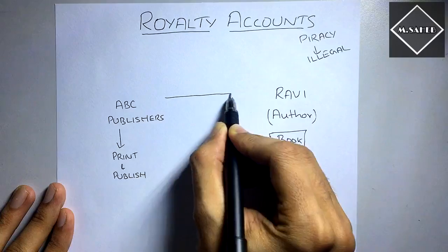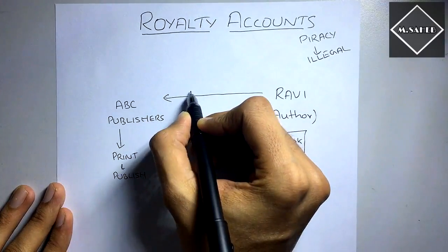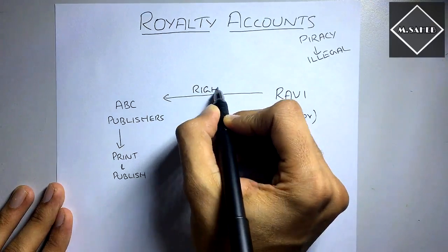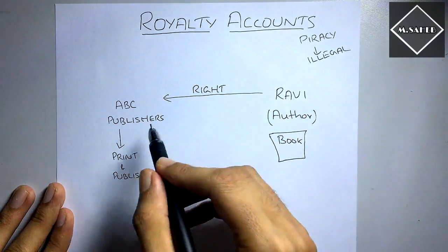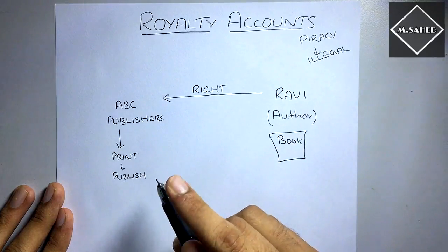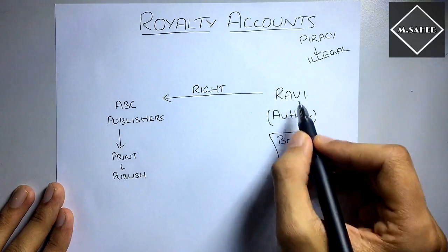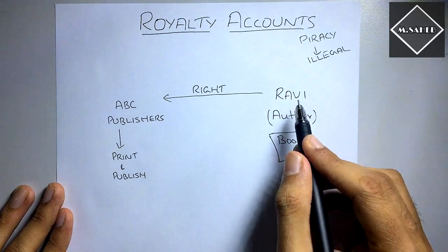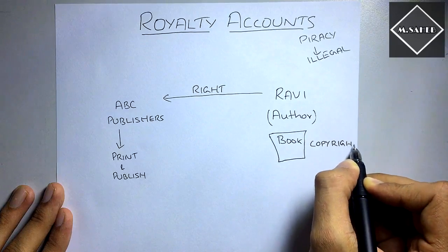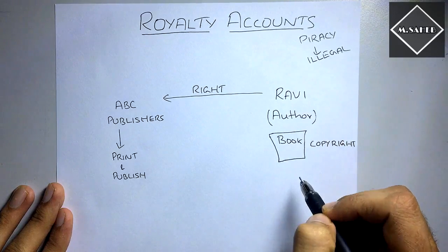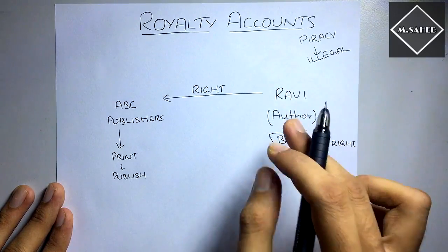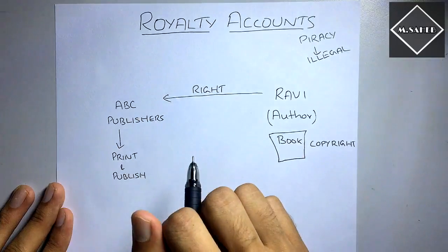Ravi has to give them the legal right. If Ravi gives them the legal right to ABC Publishers, then they can print and publish that book. Only Ravi has the copyright. Nobody else can just go and copy this book. Only Ravi has the right because Ravi is the owner or creator of this book. Now he is giving this right to ABC Publishers.